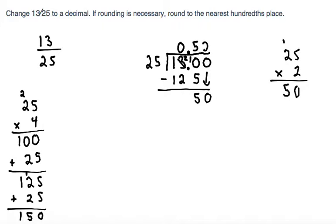You can put a 2 on top. And since 25 times 2 is 50, we put that below the 50 and subtract, leaving us with a remainder of 0. So this is our answer.